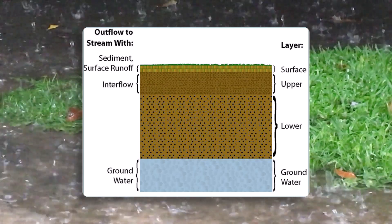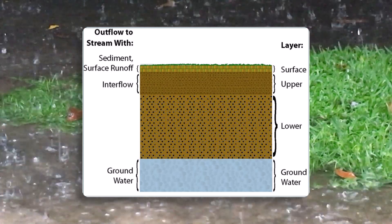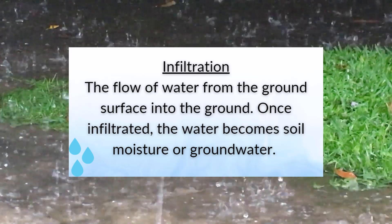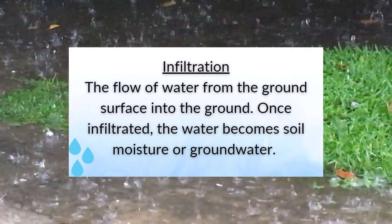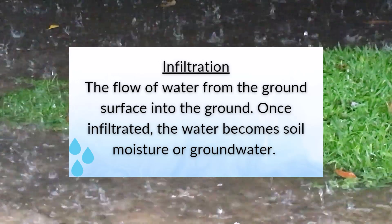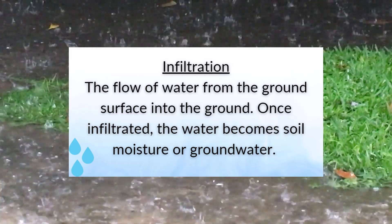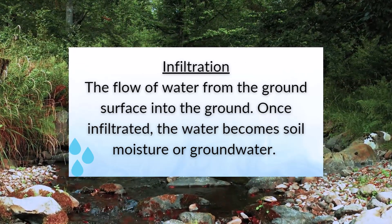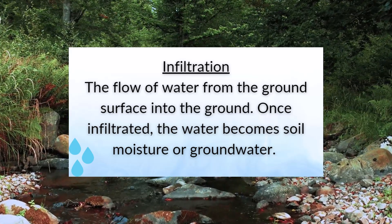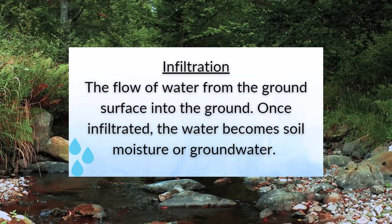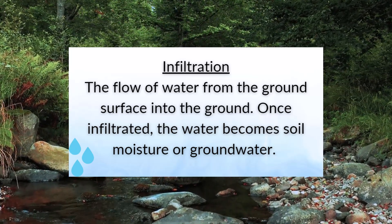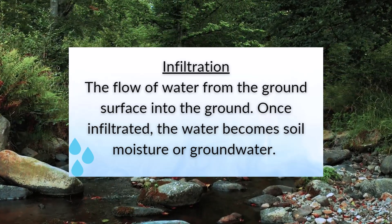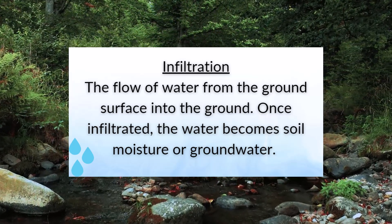So how does water infiltrate? Infiltration is the flow of water from the ground surface into the ground. Once infiltrated, the water becomes soil moisture or groundwater. If you've ever taken water and dumped it over a pile of sand, you notice that the water disappears and moves into the soil — that would be an example of infiltration. Water infiltrates differently in different kinds of soil. Water may continue to open water through the soil, and filtering may also occur along this path.